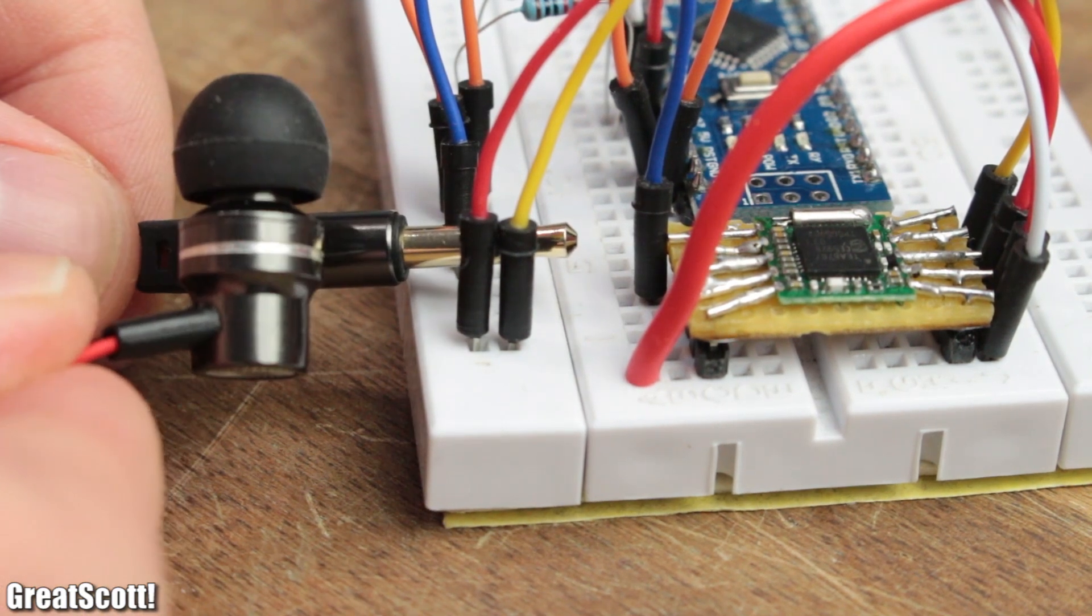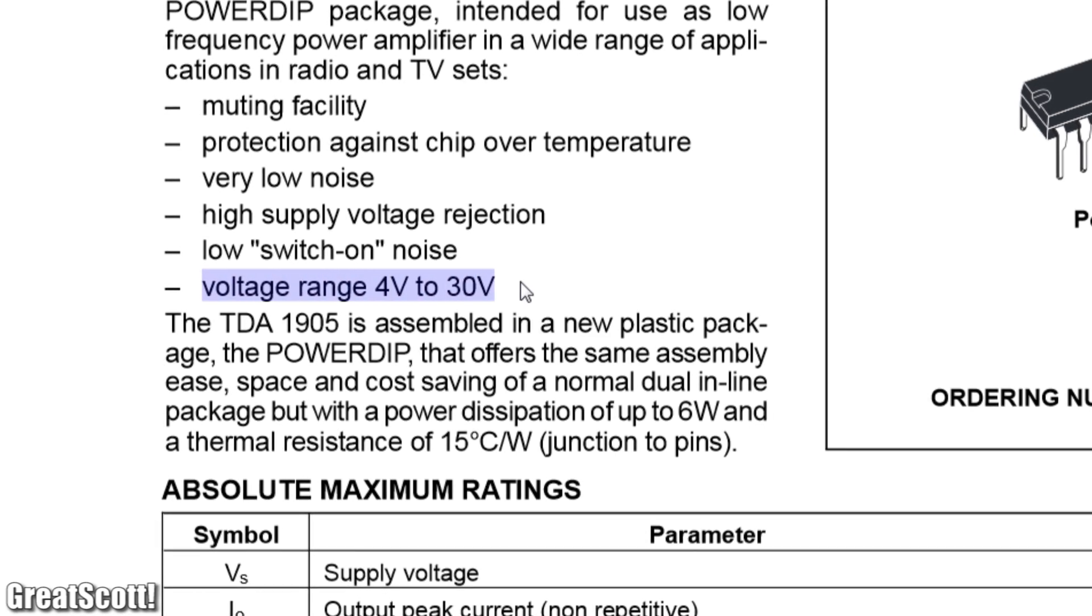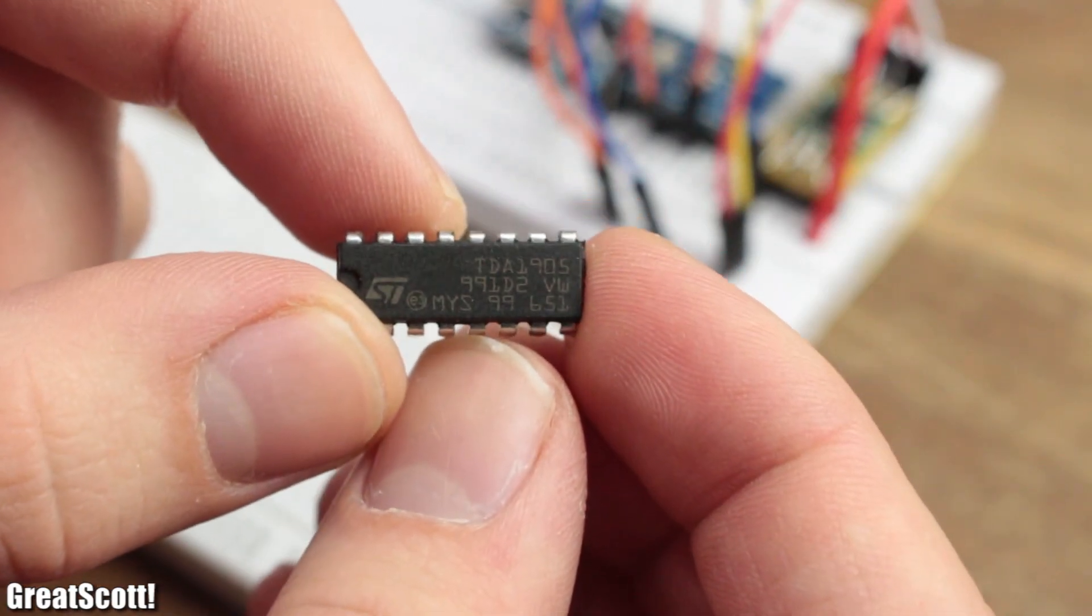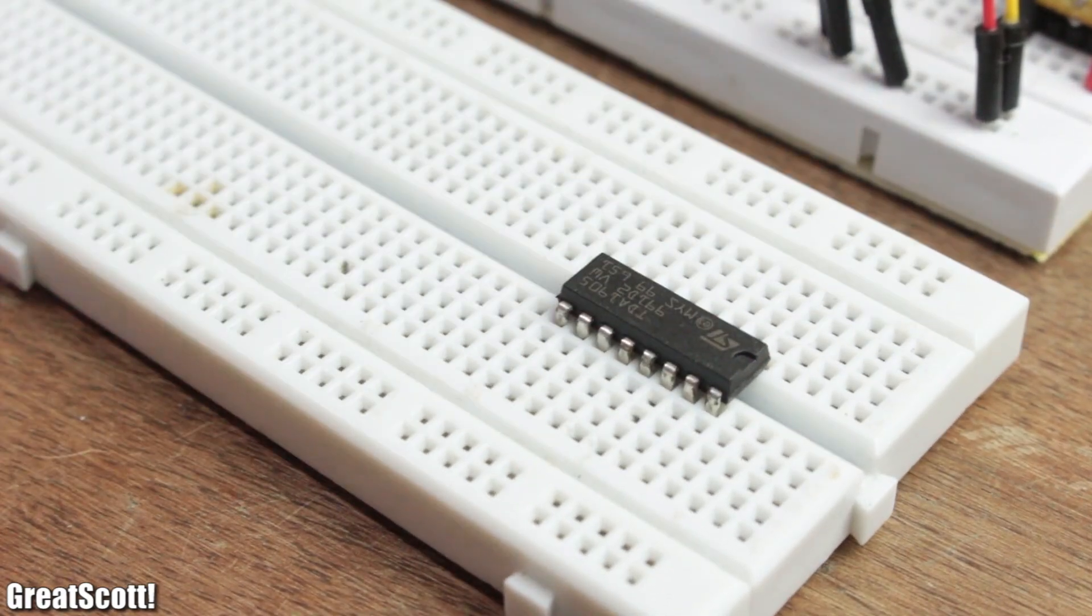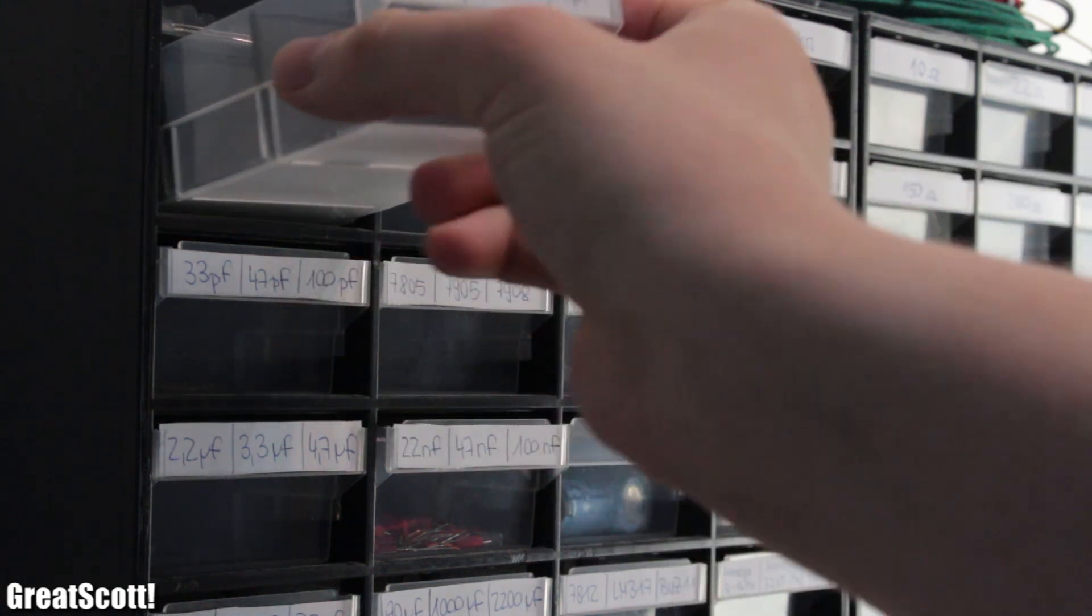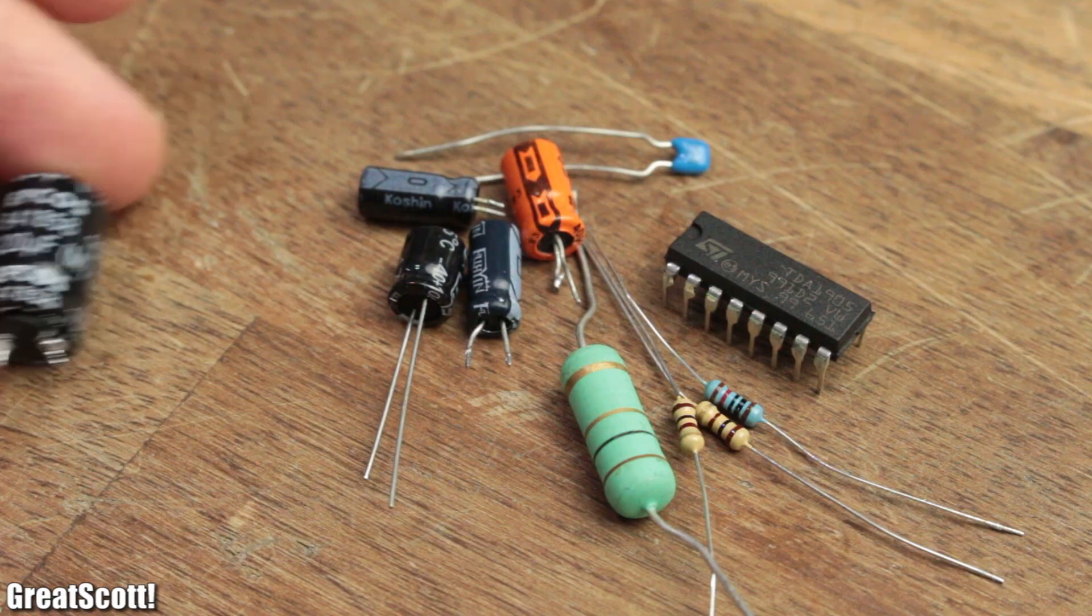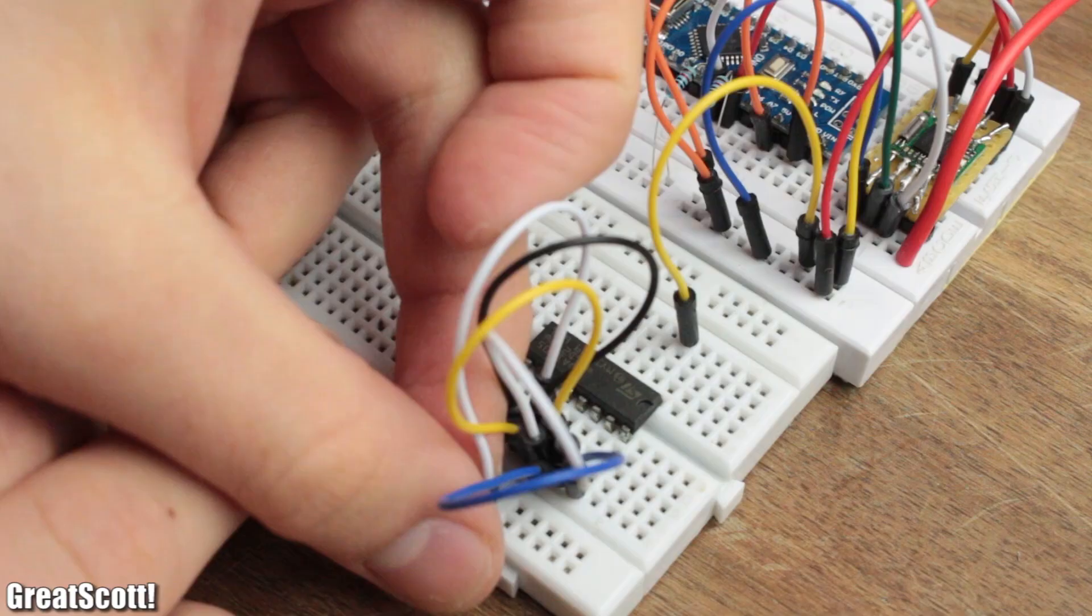Then I hooked up a long wire as an antenna which will later be replaced by a retractable antenna. And since I don't want to and also can't use earbuds directly with the IC, I had to use an appropriate 5V audio amp. I went with this TDA-1905 5W amp which offers a recommended application schematic in its datasheet.